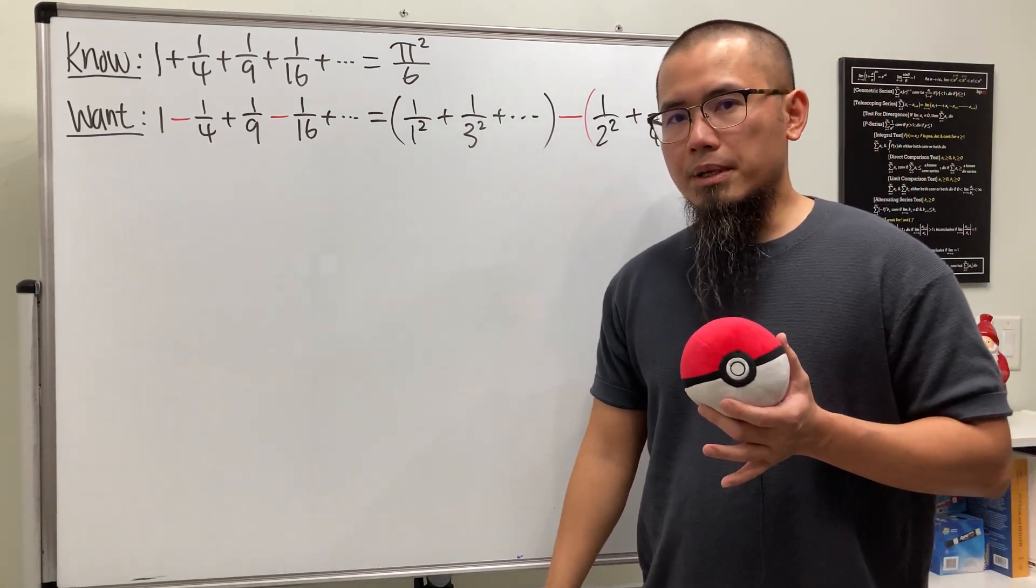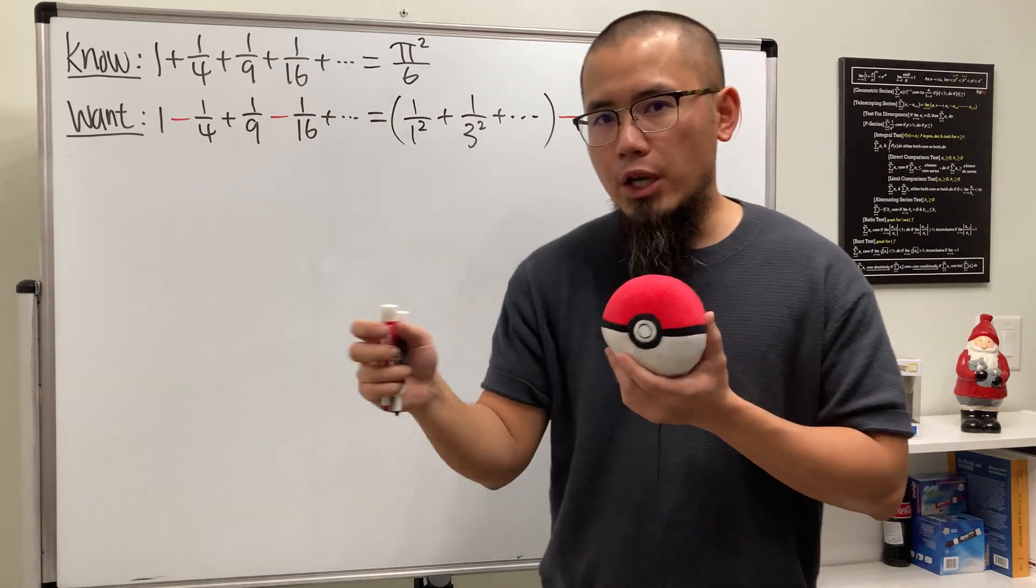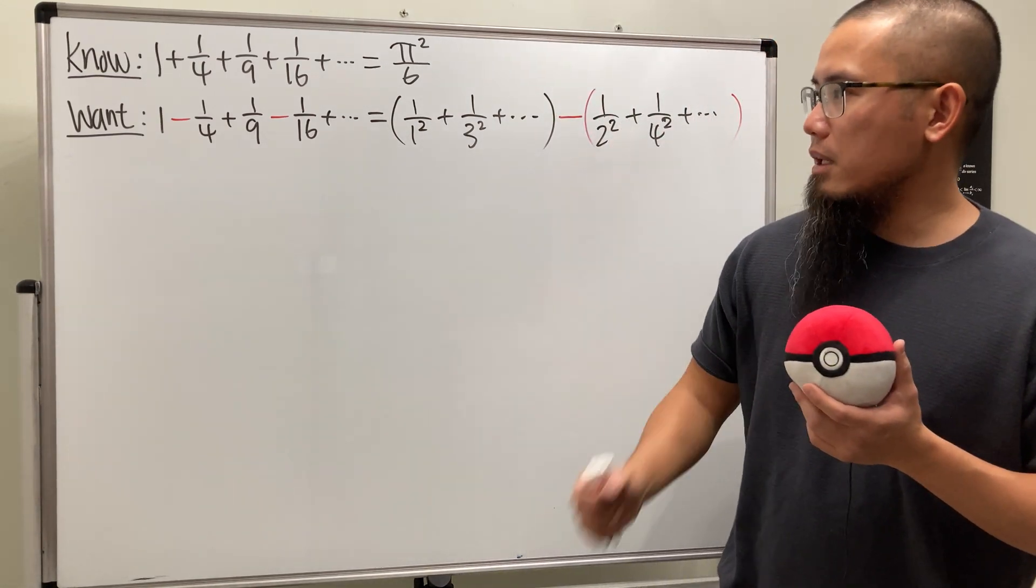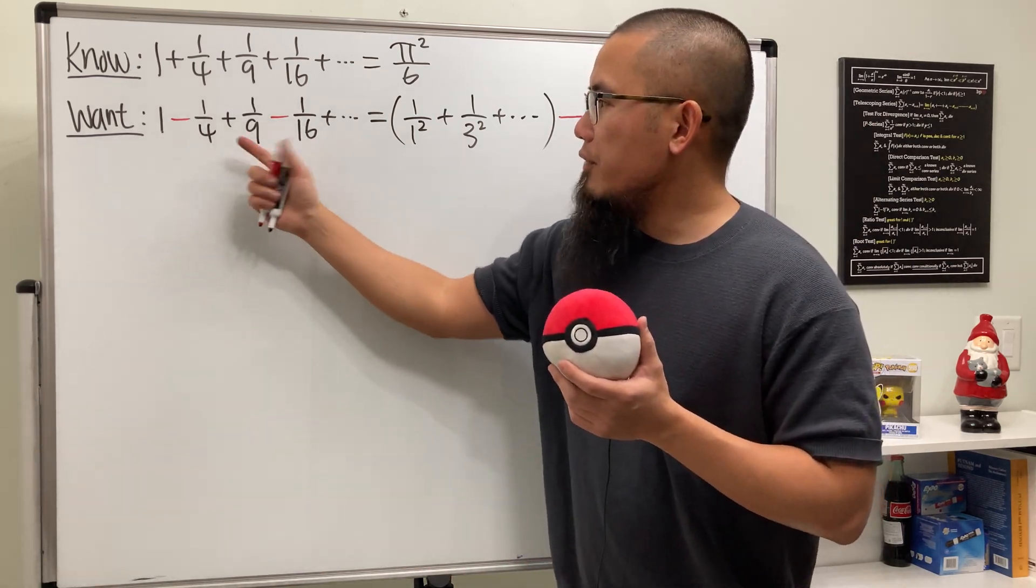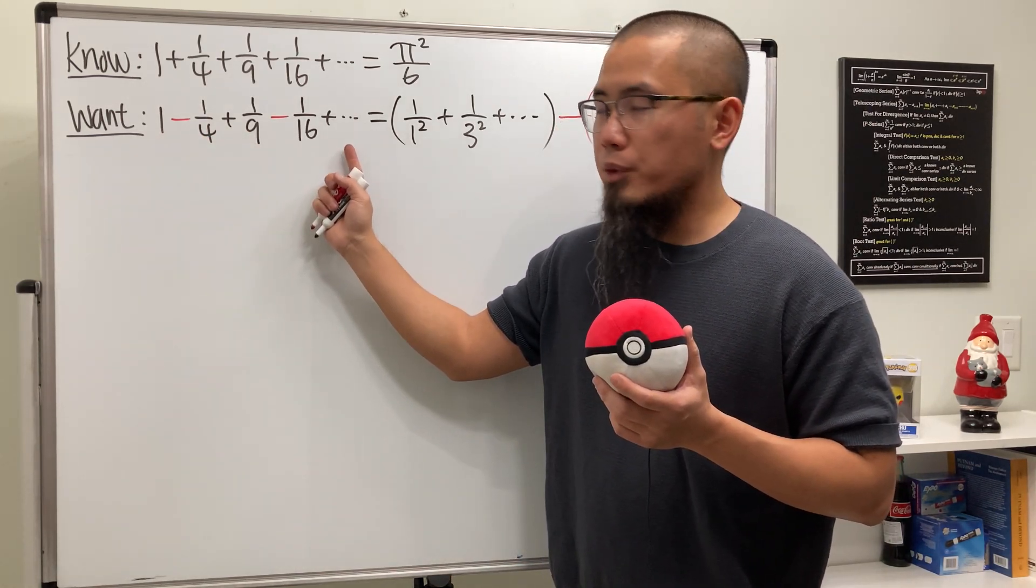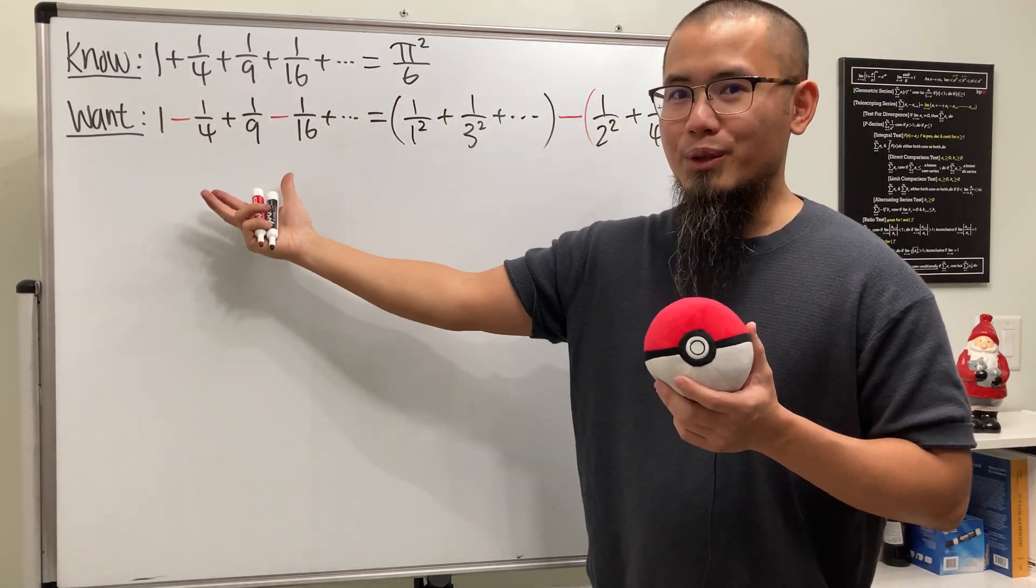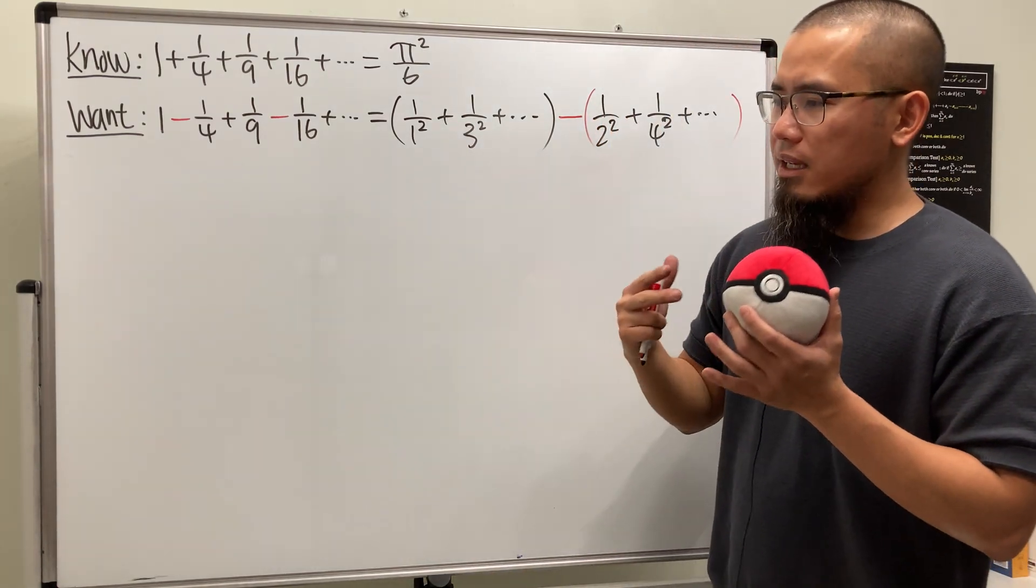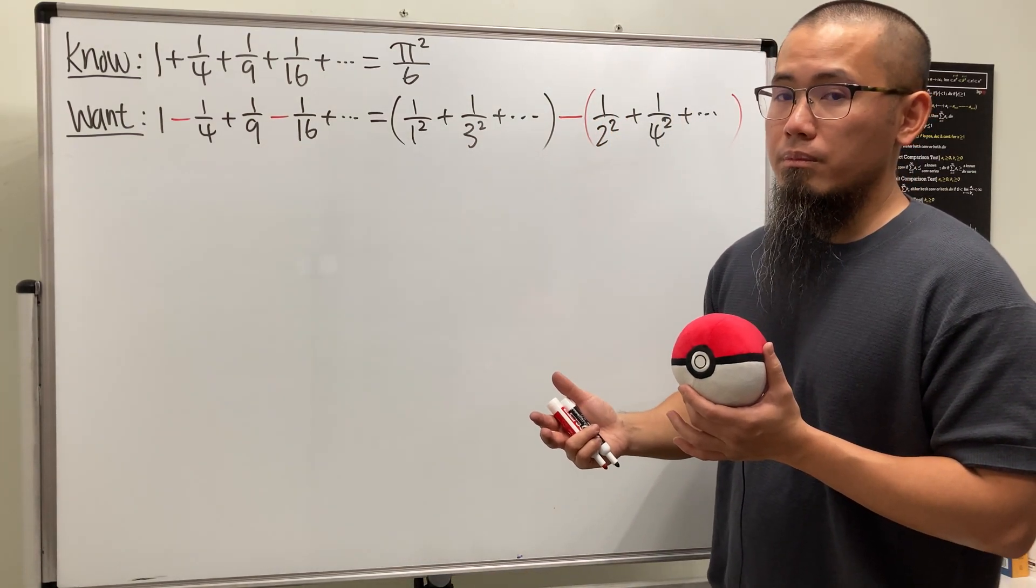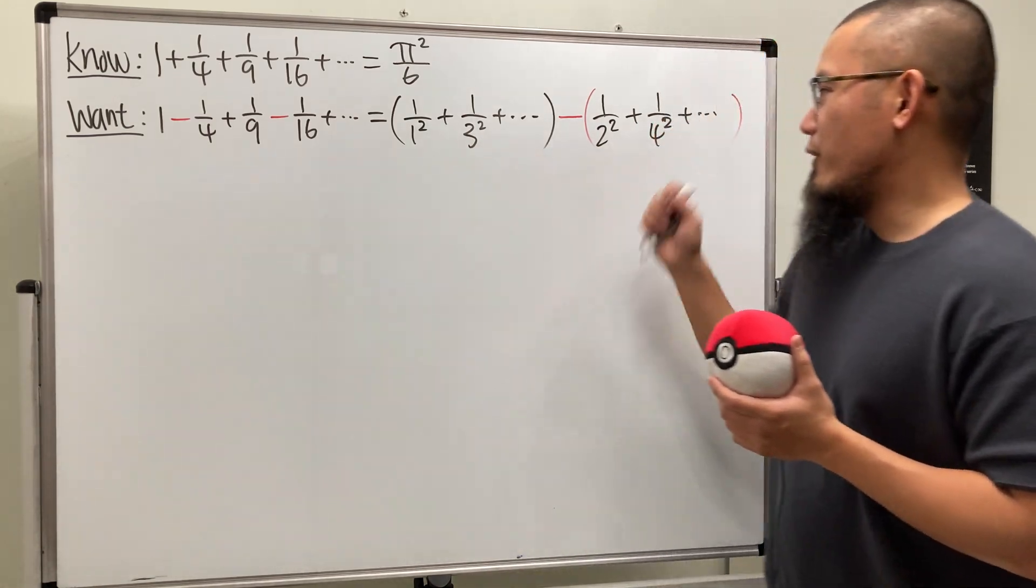And let me just talk about this real quick. We can legitimately do this, namely rearrange the terms, because this right here is an absolute convergent series, meaning that if you look at all the terms being positive, which we know is right here, this right here converges, so we know this is absolute convergent. And if we have a conditional convergent, then we cannot rearrange the terms like this. So this is very nice.